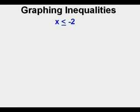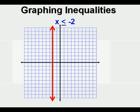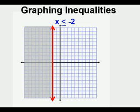On a number line, we mark the boundary point as a solid point since it's equal to. And since on the symbol the arrow tip points to the left for less than, we draw the arrow to the left on the graph as well. To graph it on a coordinate plane, we draw a vertical line at x equals negative 2. It's solid since it's equal to, and since it's less than, with the symbol pointing to the left, we shade to the left of the boundary line.